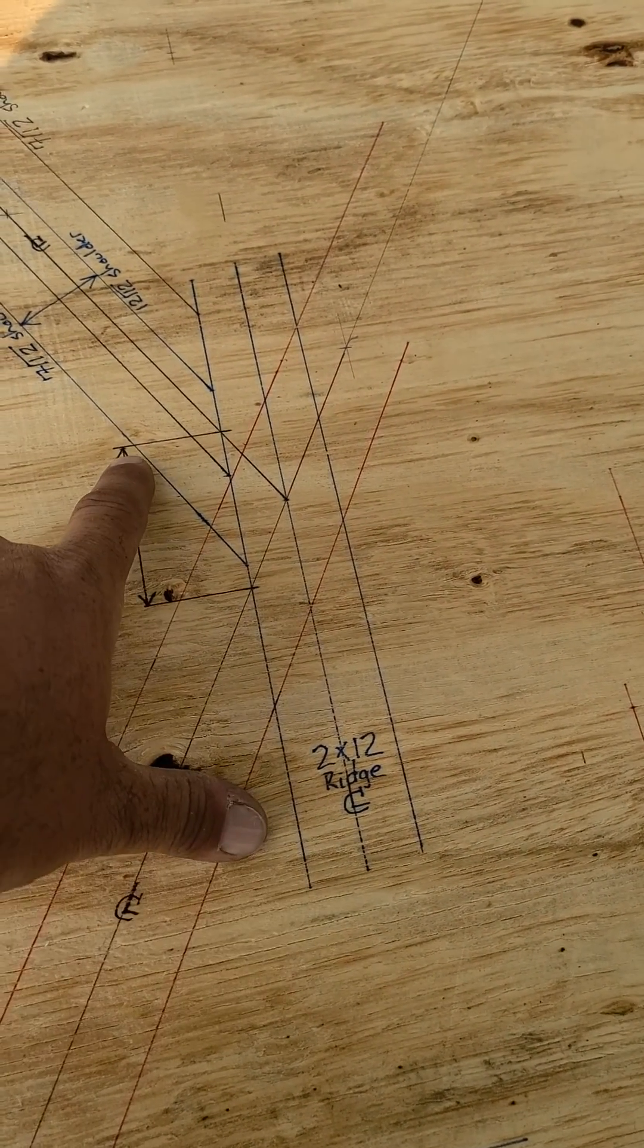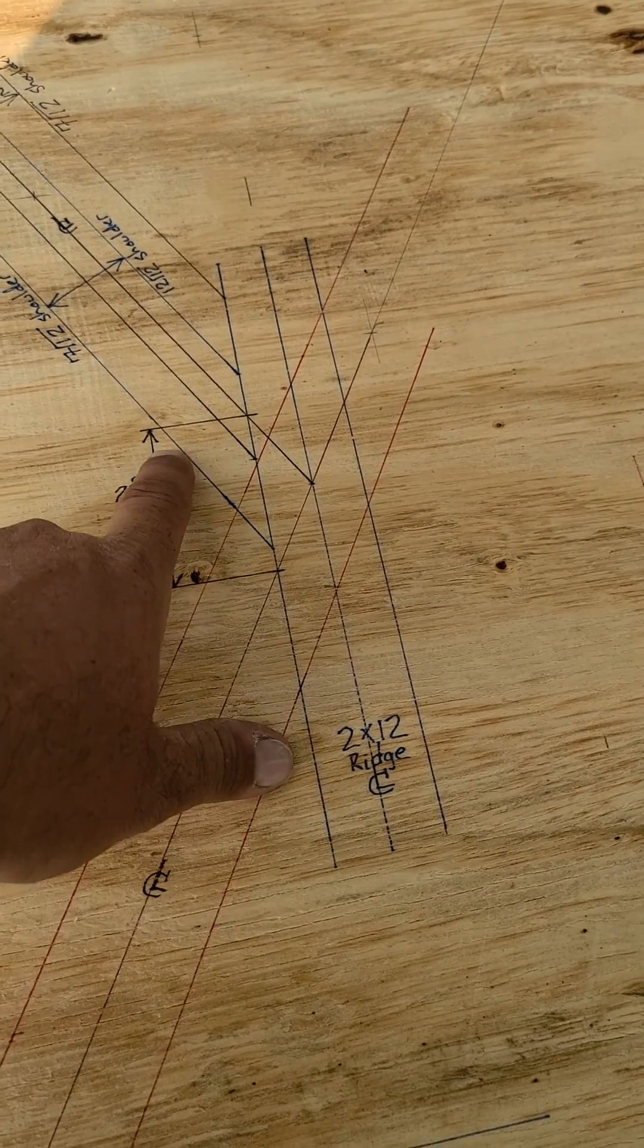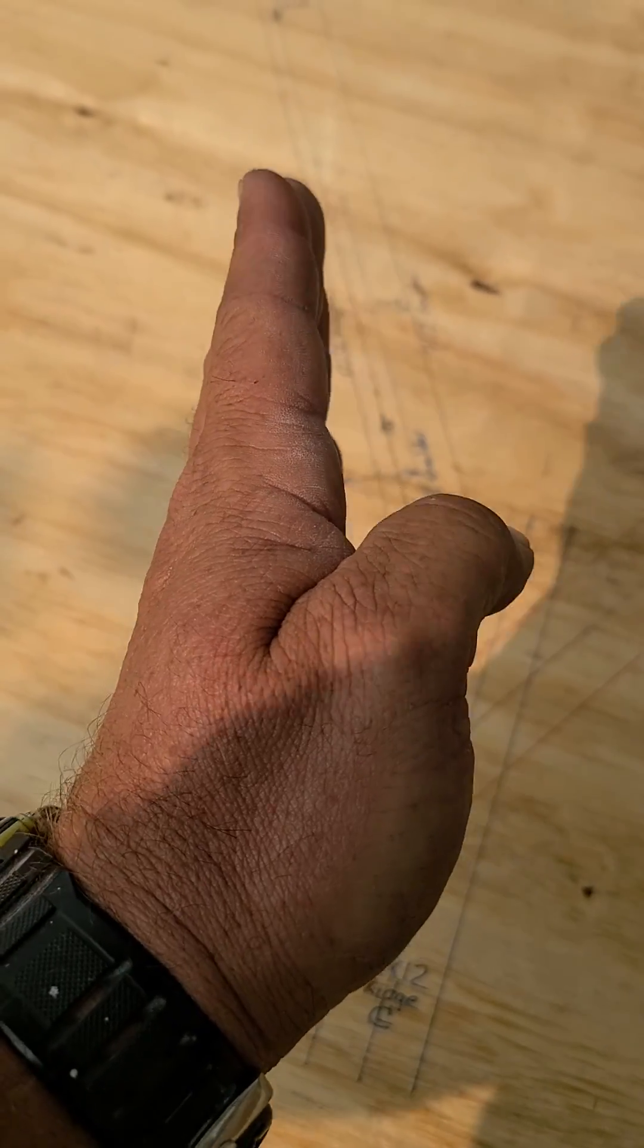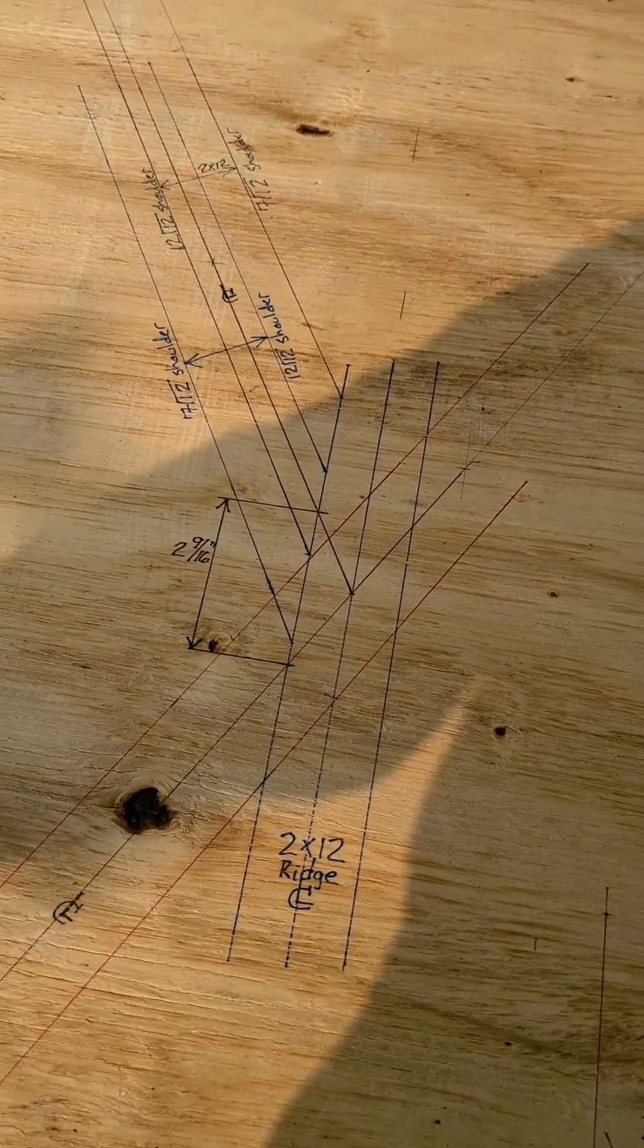This dimension needs to come off to calculate your run or you're going to end up throwing your hip out of the plan angle that it needs to sit in.